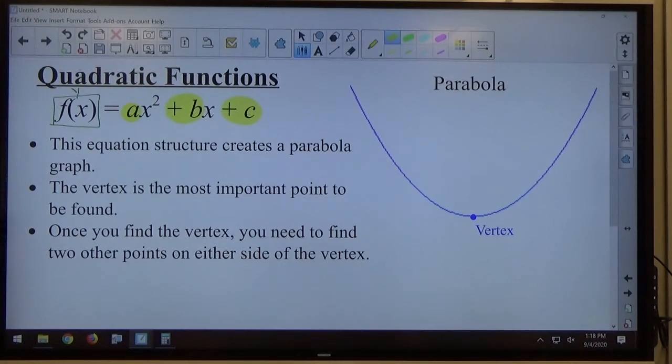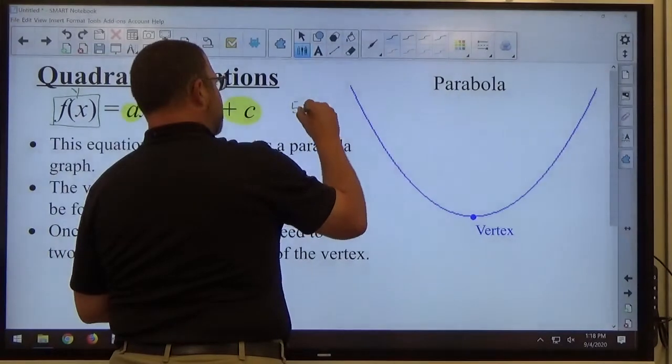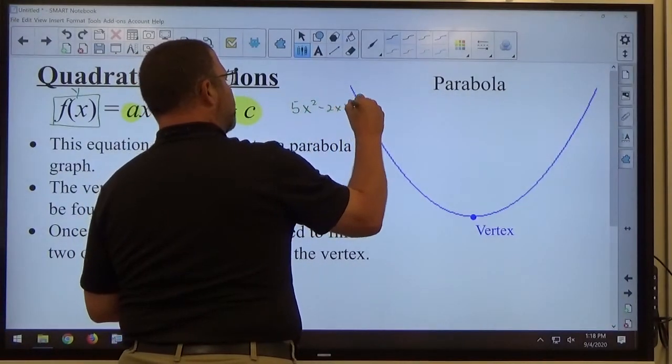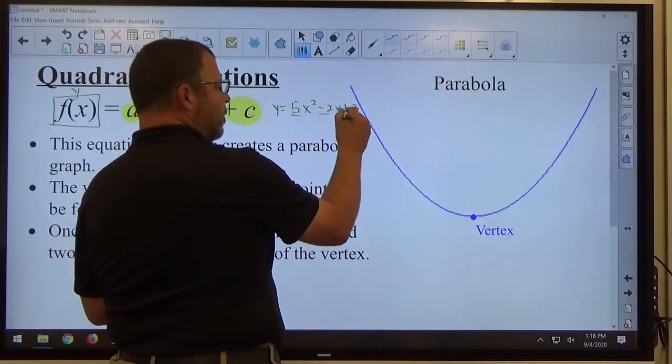So a might be 5 and b might be negative 2 and c might be 3. That would be 5x squared minus 2x plus 3 equals y, right? So a equals 5, b is negative 2, c is 3.